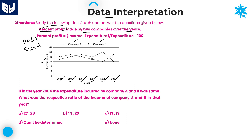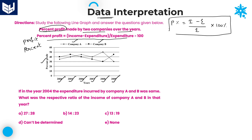Along with this information, we have another piece of information — the formula. Profit percentage is equal to income minus expenditure, divided by expenditure, into 100. That is the formula for profit percentage. Remember, when you are calculating the profit percentage, always we need to take that profit percentage over expenditure only, not over income. That is the first and foremost important point you need to remember.